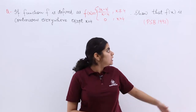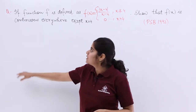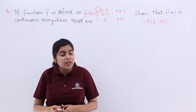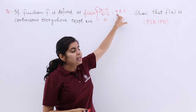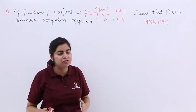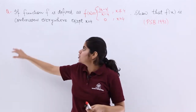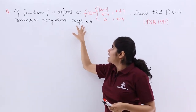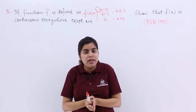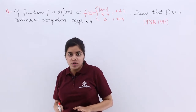The question was asked in a state board examination in the year 1992. It says that if the function f is defined as f(x) with different values when x is not equal to 4 and when x is equal to 4, show that the function is continuous everywhere except at x equal to 4.